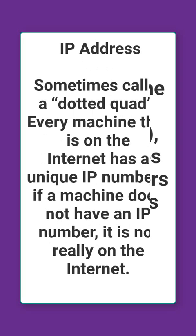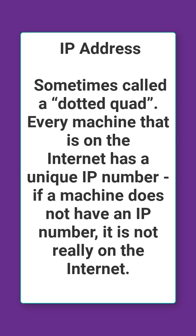The second is IP address. Sometimes it is called a dotted quad, and every machine that is on the internet has a unique IP number. If a machine does not have an IP number, it is not really on the internet.